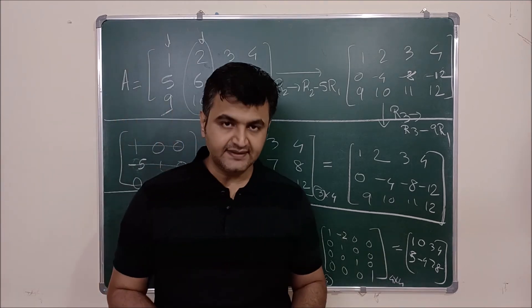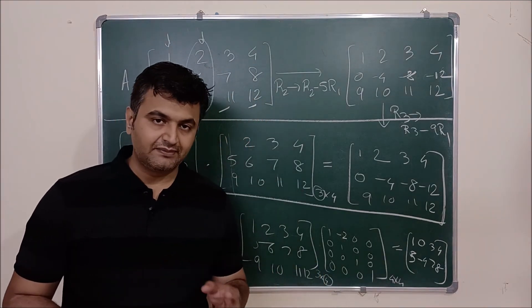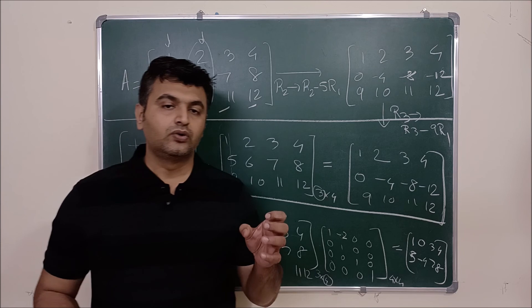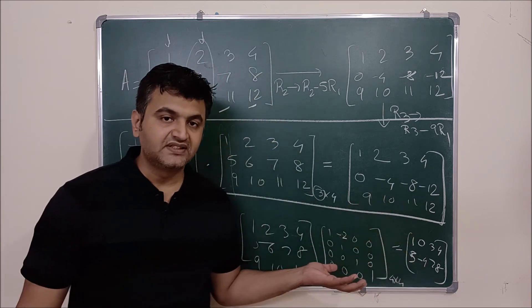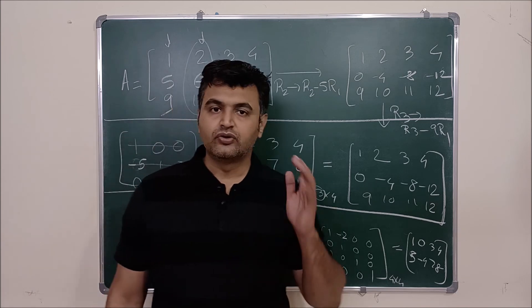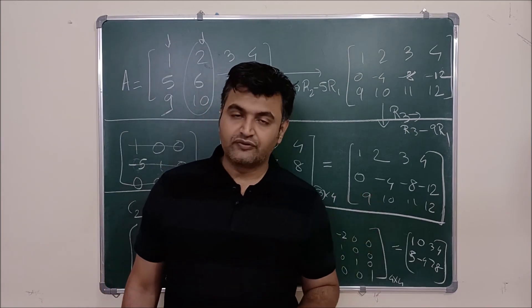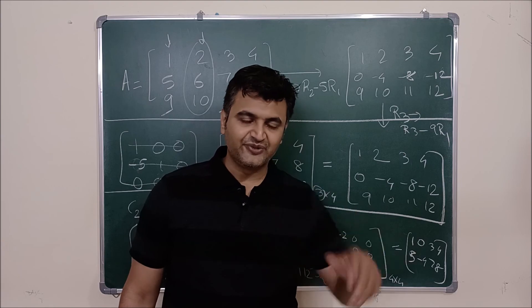So that's what the idea is. Doing row operation is same as pre-multiply the matrix. Doing column operation means you post-multiply the matrix. So I hope this idea is clear. If you have any doubt you can ask me in the comment section. If everything is clear do not forget to like share and subscribe. Thank you.